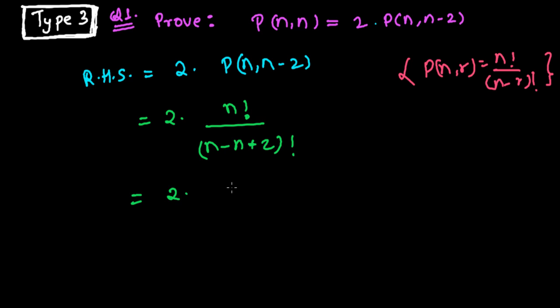So I get 2 times n! divided by 2!. Since 2! equals 2 times 1, the 2s cancel and I get n!. That's actually n! divided by (n-n)! which equals n!/0!.